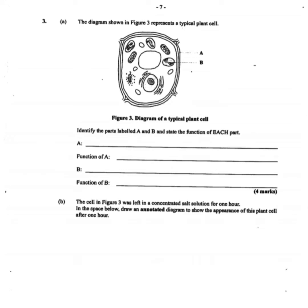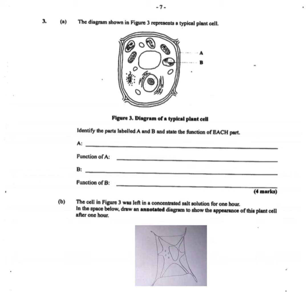Part B says the cell was left in a concentrated salt solution for one hour, and asks us to draw an annotated diagram of the plant cell after one hour. The cell should appear plasmolyzed, with the cell membrane pulling away from the cell wall. There was a higher concentration of water molecules inside the cell and a lower concentration in the salt solution, so water moves out of the cell. You should label the diagram accordingly.